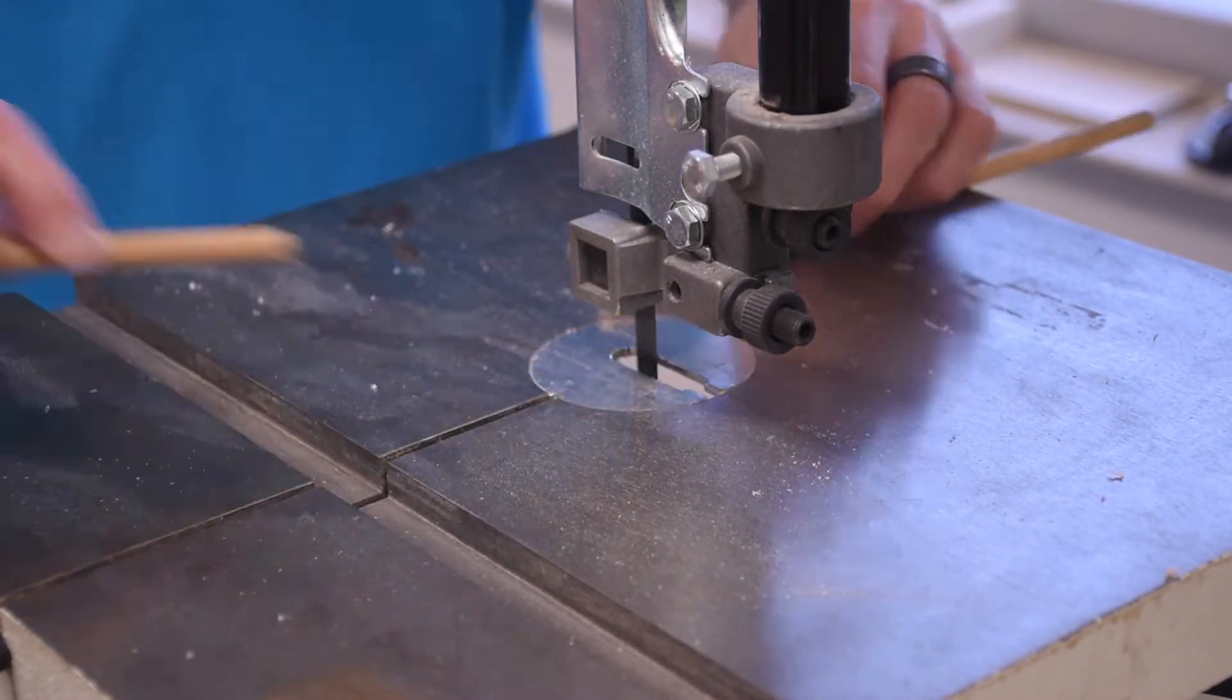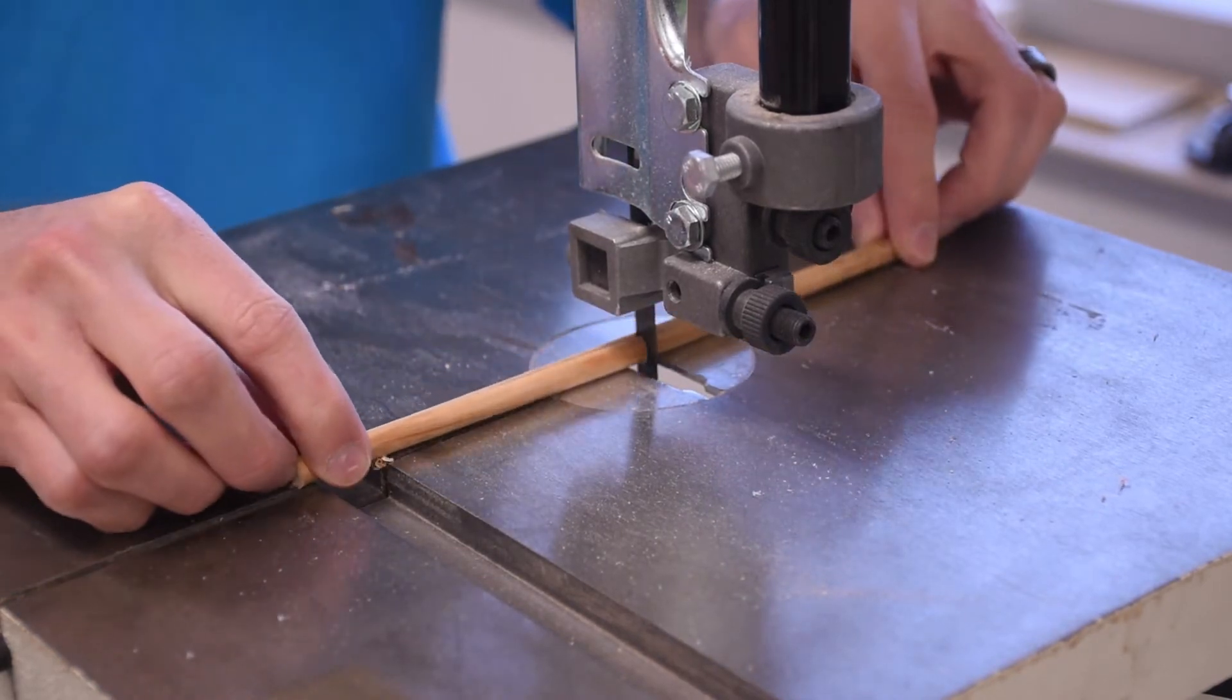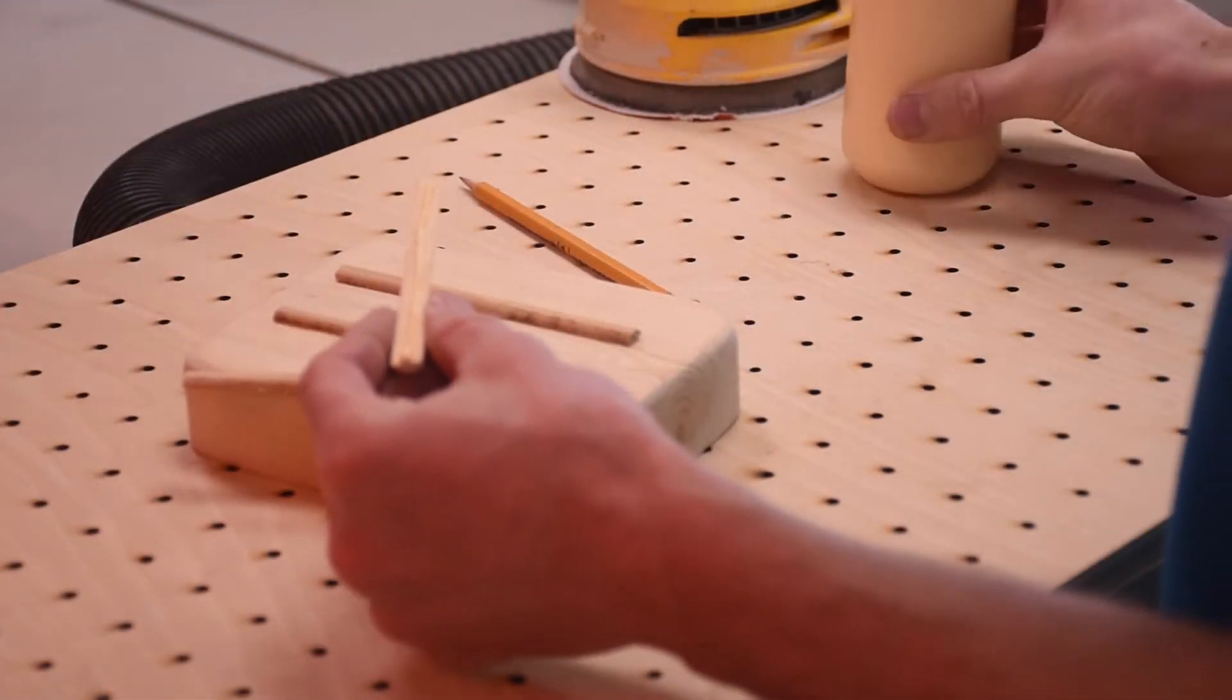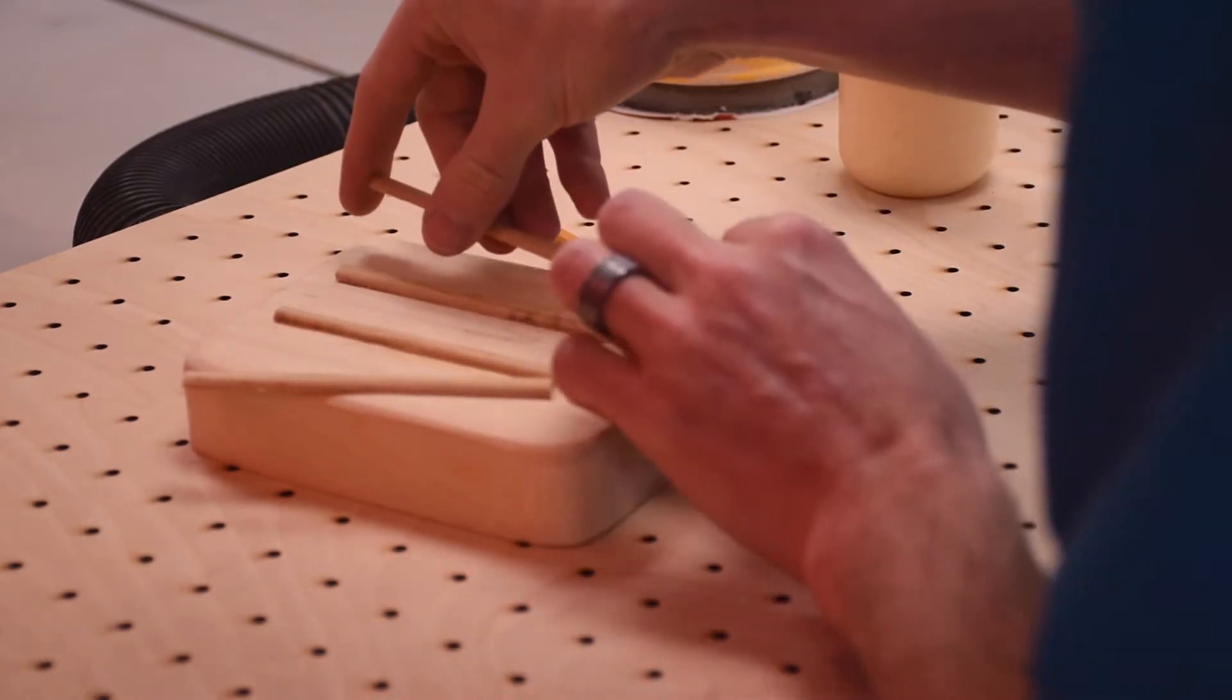I needed the bottom to be rigid, so I split a one quarter inch dowel on the bandsaw and glued four halves to the top of the mold. This will leave stiffening channels in the tray.